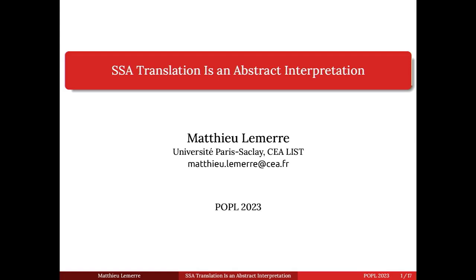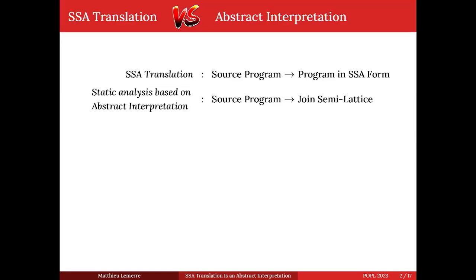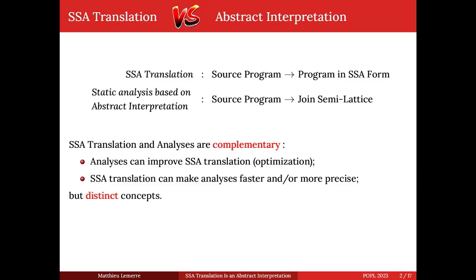SSA translation is an abstract interpretation — this should be a surprising sentence. SSA translation is a program transformation: it takes a source program and transforms it into another program in SSA form. Abstract interpretation is a tool to describe static analysis, which takes a source program and outputs joint similarities describing a set. They are complementary: your analysis can improve SSA translation, and SSA translation can make your analysis faster or more precise — but are they really distinct?